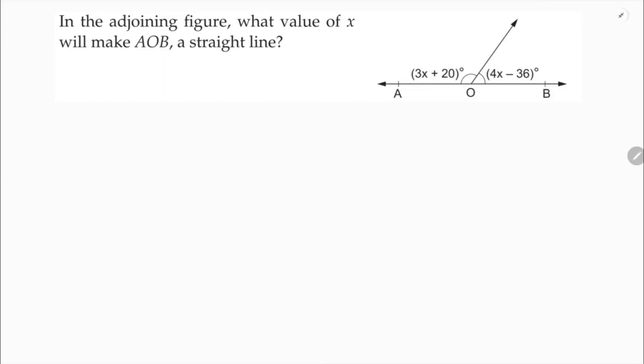In the adjoining figure, what value of x will make AOB a straight line? If AOB is a straight line, then angle AOC plus angle BOC should equal 180 degrees. So to make AOB a straight line, angle AOB should be 180 degrees.